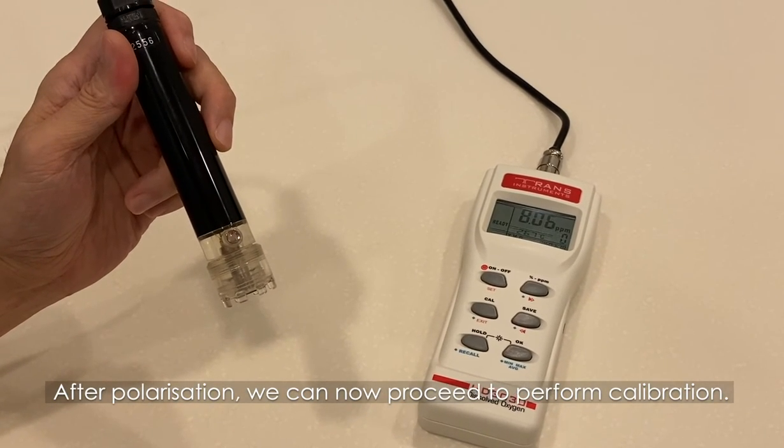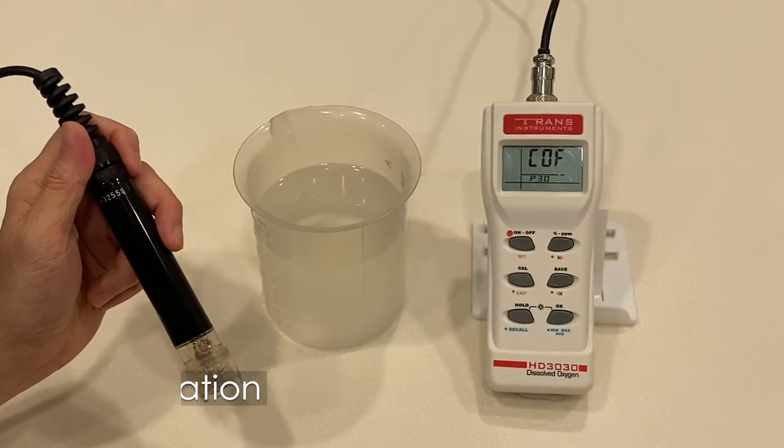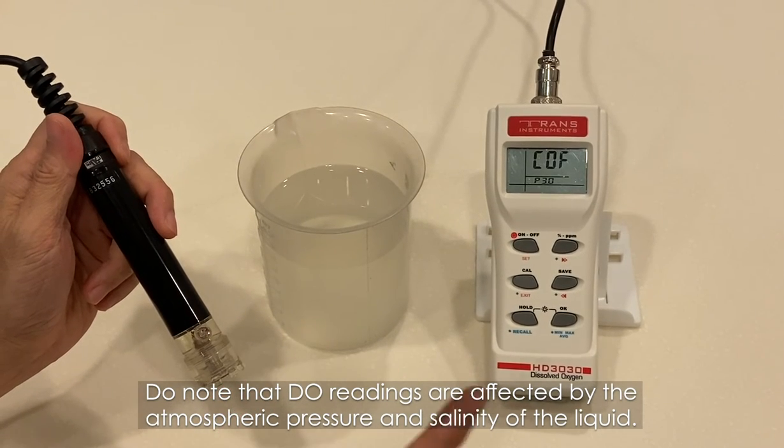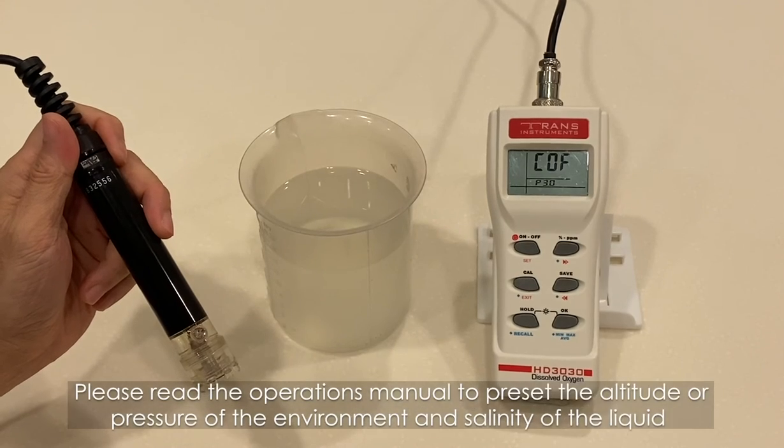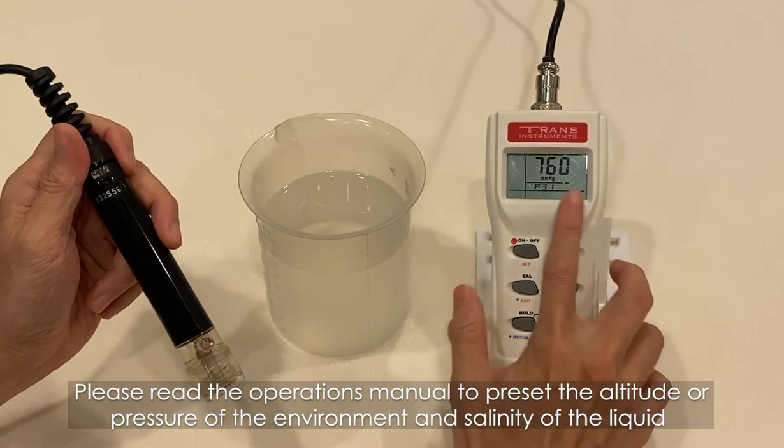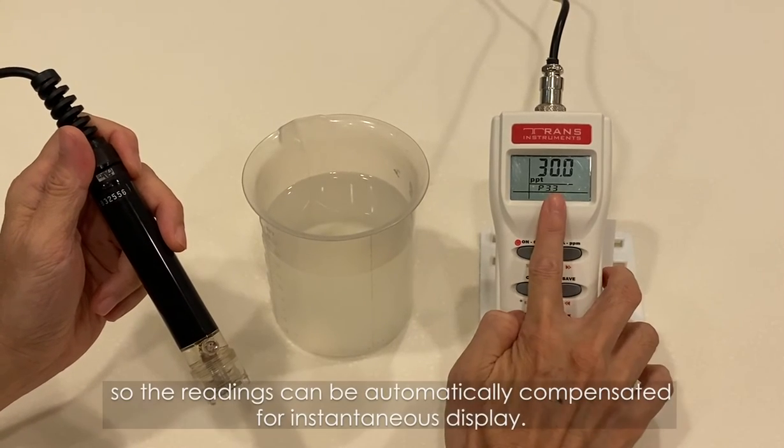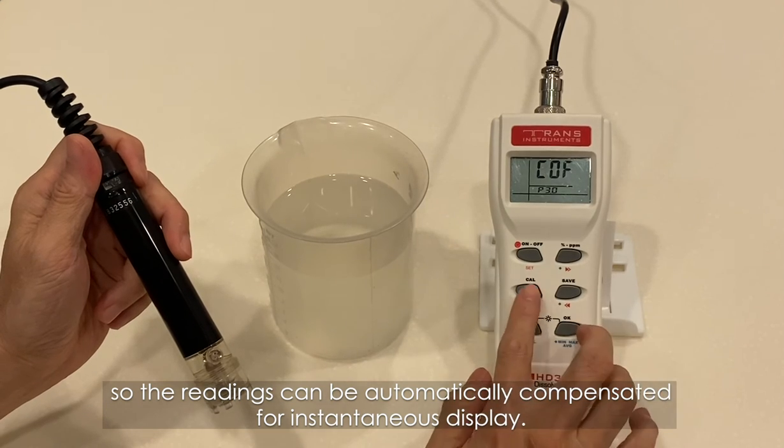After polarization, we can now proceed to perform a calibration. Do note that DO readings are affected by the atmospheric pressure and salinity of the liquid. Please read the operational manual to preset the altitude or pressure of the environment and salinity of the liquid so the readings can be automatically compensated for instantaneous display.